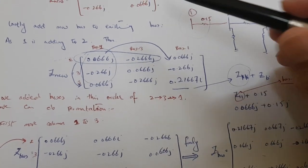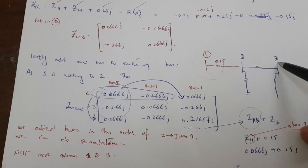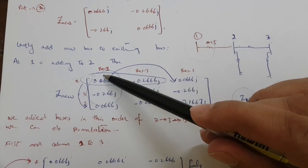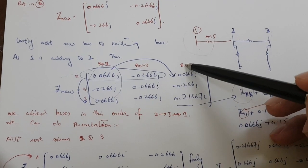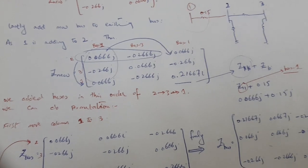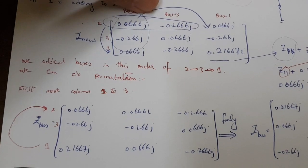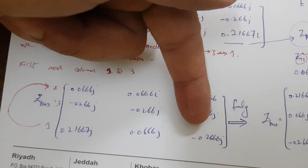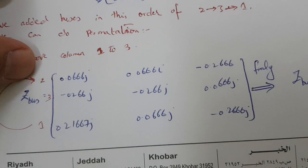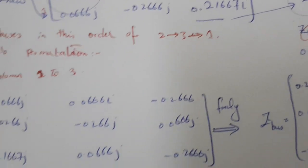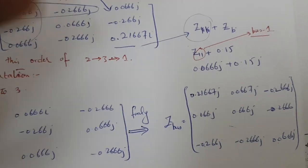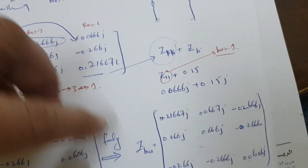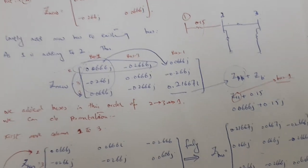You can do one additional optional thing: rearrange the matrix. Since we first connected bus two, then bus three, then bus one, the current order is 2, 3, 1. You can rearrange by columns and then by rows to get the standard order 1, 2, 3. Shift the bus one column to first position, then reorder the rows correspondingly. This optional rearranged matrix is the final result. Hope you understand, thank you.